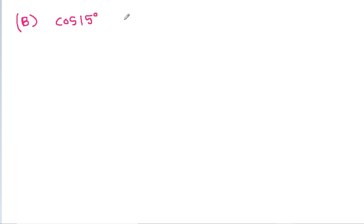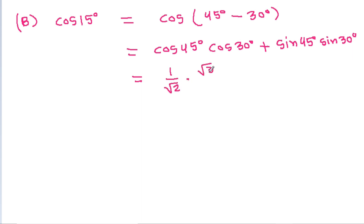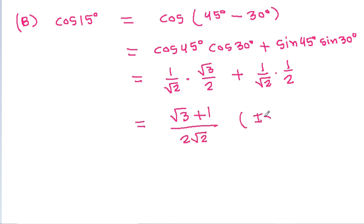Option B is cos 15 degrees. We write cos(15°) as cos(45° - 30°), which equals cos 45° cos 30° plus sin 45° sin 30°. That gives us (1/√2)(√3/2) plus (1/√2)(1/2), which equals (√3 + 1) / (2√2). That is irrational.